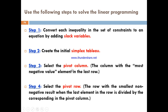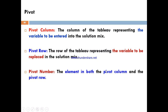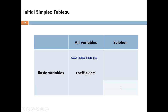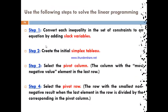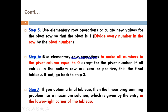The third step is to select the pivot column, which is the column with the most negative value element in the last row. The fourth step is to select the pivot row, which is the row giving the smallest non-negative result when the last element in the row is divided by the corresponding element in the pivot column.